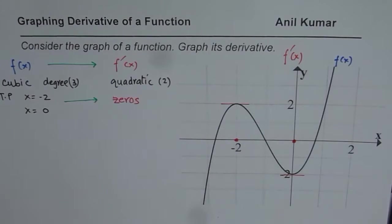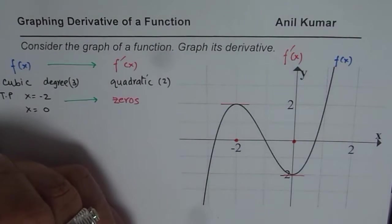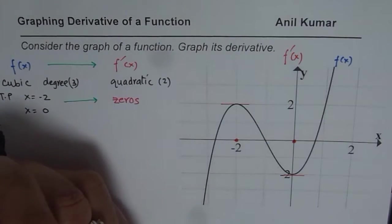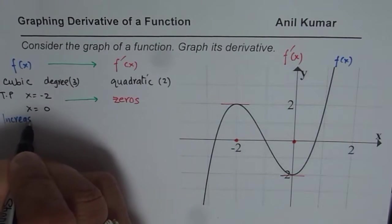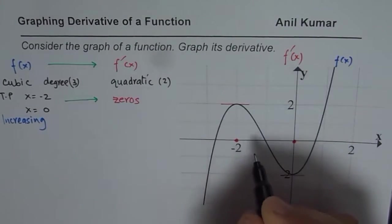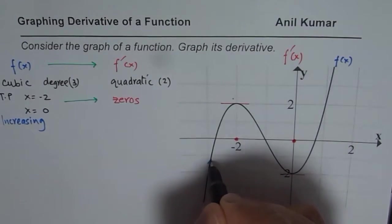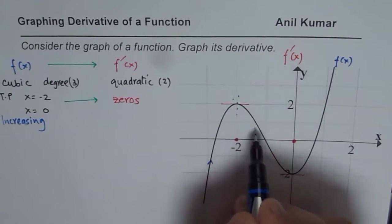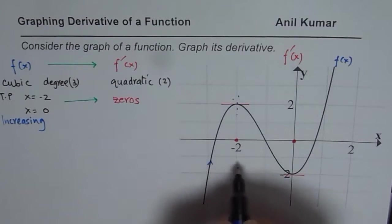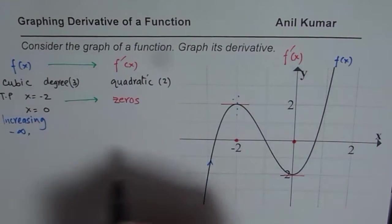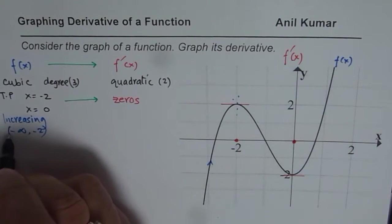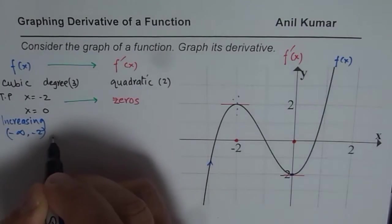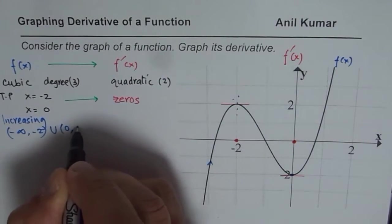Now, then what we should notice is in the graph of the function, interval for increasing. So when is the function increasing? Increasing means, if I see it is increasing as we go from this place to this place. Here, it is turning point. So it is increasing, in this case, from minus infinity to minus 2, and it is also increasing from 0 to infinity.